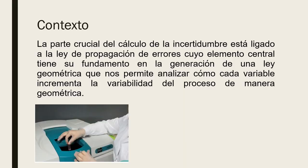Una parte crucial del cálculo de la incertidumbre está ligada a la Ley de Propagación de Errores, cuyo elemento principal permite analizar cómo se incrementa la variabilidad de un proceso de manera geométrica en cada una de las contribuciones de las distribuciones que componen el cálculo de la incertidumbre, considerando variabilidades importantes tanto de tipo A como tipo B, es decir, aquellas cuyo fundamento parte de la repetibilidad o cuyo fundamento parte de las características de los procesos de medición o las características instrumentales.